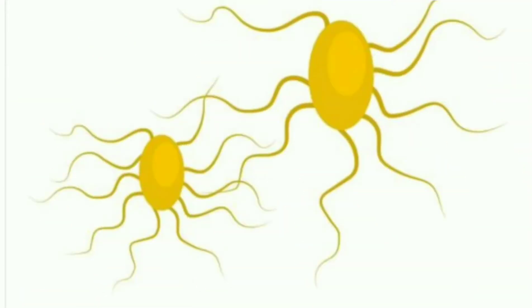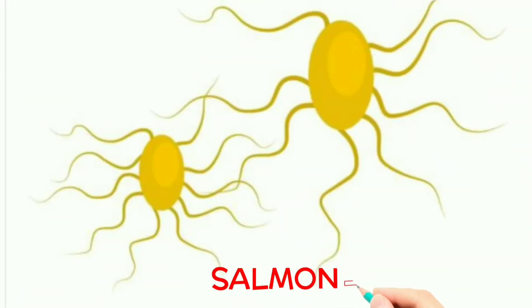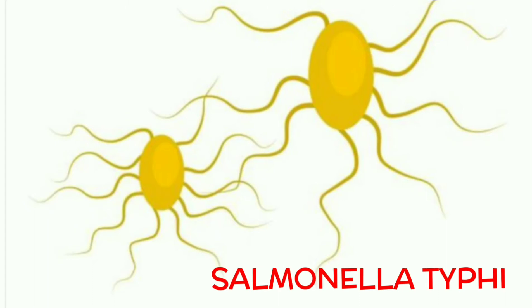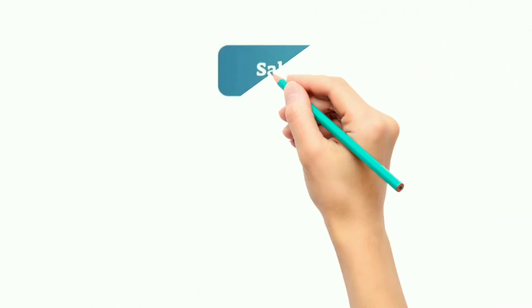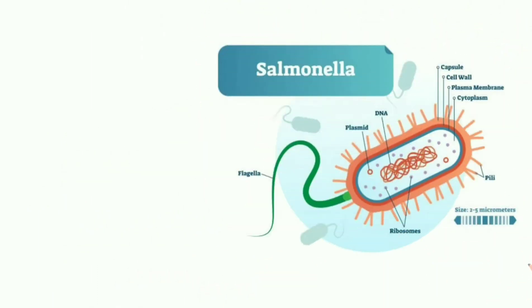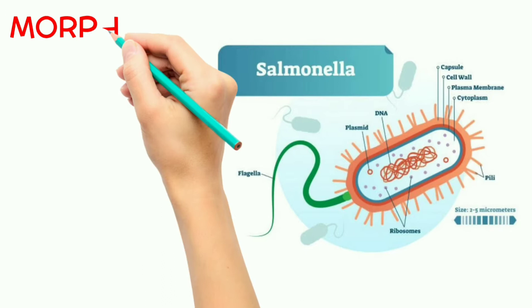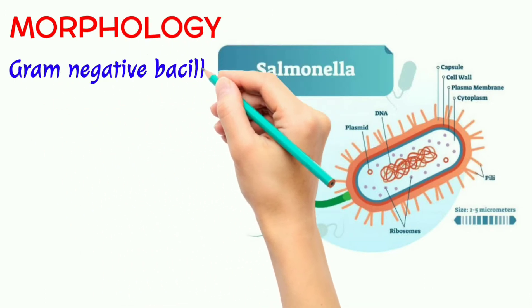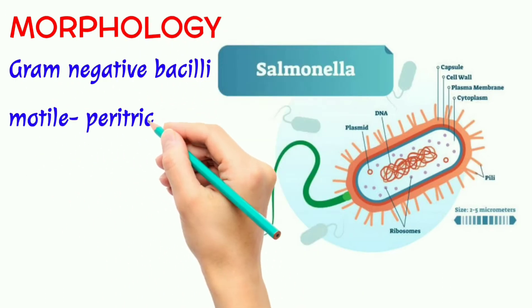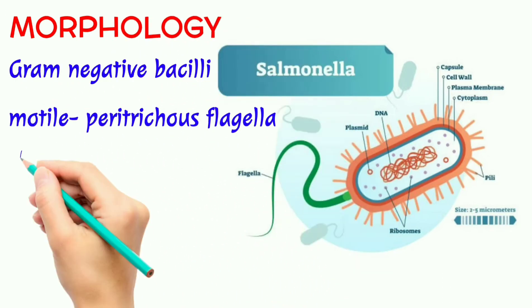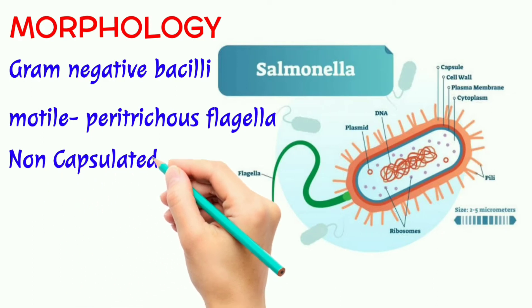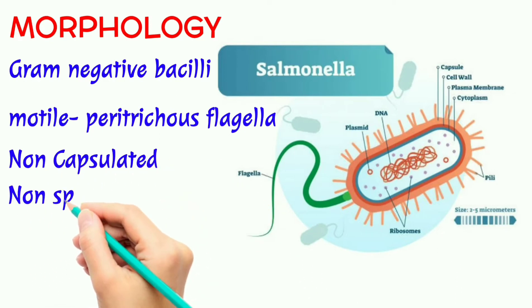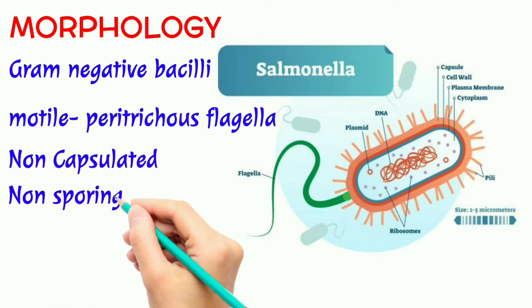Welcome to Dynamic Medicos. Today in this video I am going to talk about bacteria Salmonella typhi. Let's first start with the morphology. It is a gram-negative bacilli, motile with peritrichous flagella, and it is non-capsulated and non-sporing bacteria.